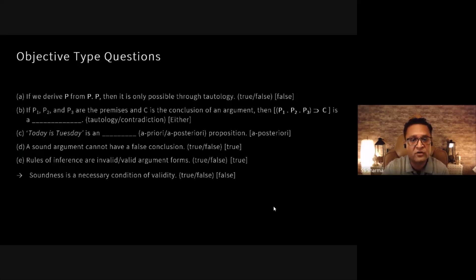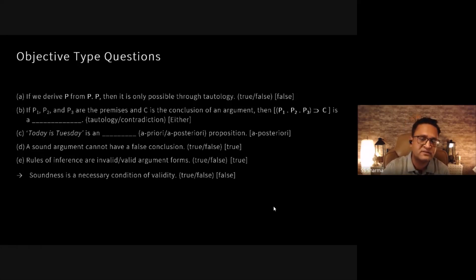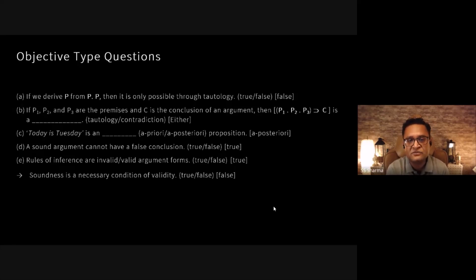The next question: 'A sound argument cannot have a false conclusion' — is this true or false? This is true, because a sound argument is defined as a valid argument with true premises and a true conclusion. Therefore it cannot have a false conclusion, so the statement was true.